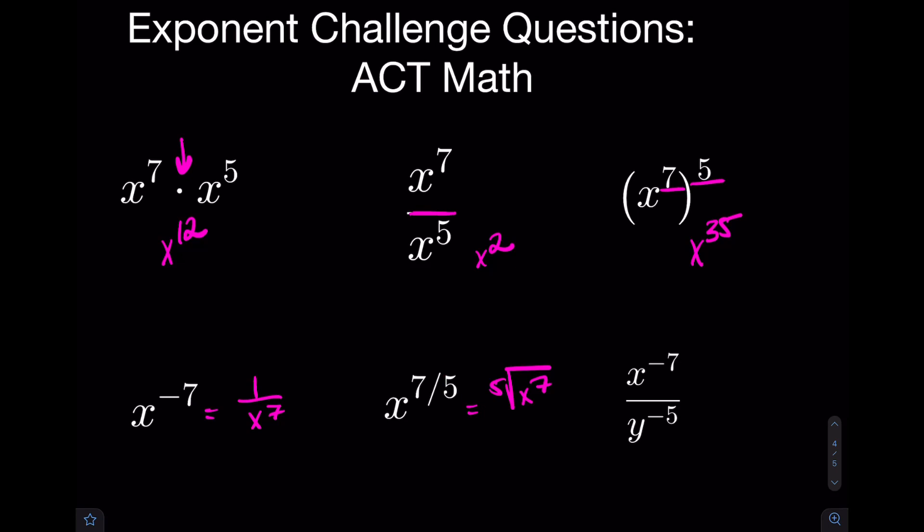And the last skill here to see is, well, we already kind of dealt with negative exponents. A negative exponent to the top will send it to the bottom, and a negative exponent in the bottom will send it to the top. We have y to the 5th over x to the 7th. This is your quick little review on exponent rules. If you need to, obviously, go back and watch this part one more time before we get into the hard questions.